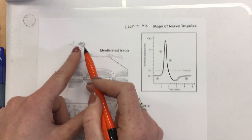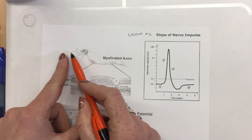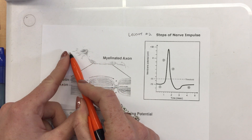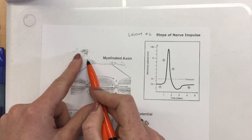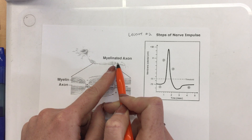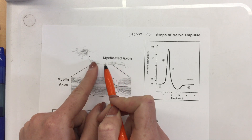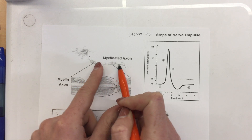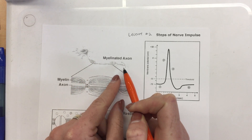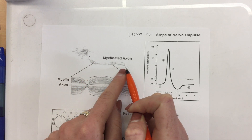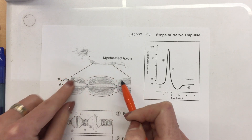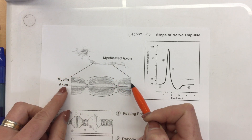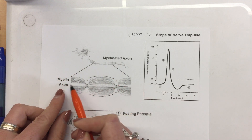Right here we have a neuron. It's a little bit hard to see, but you can see the dendrites up here, the cell body. We have the axon with the Schwann cells covering it and our synaptic knobs over here. And what we're zooming in on is the axon itself.